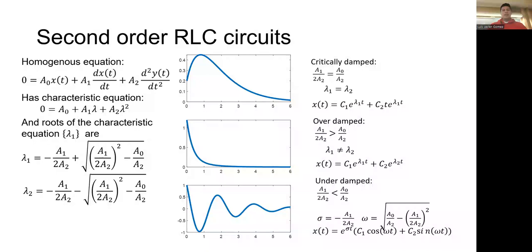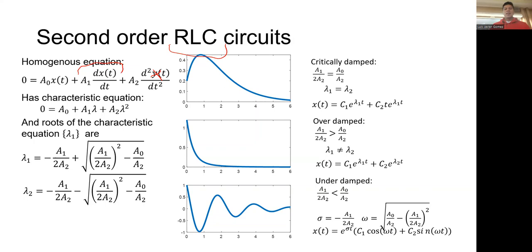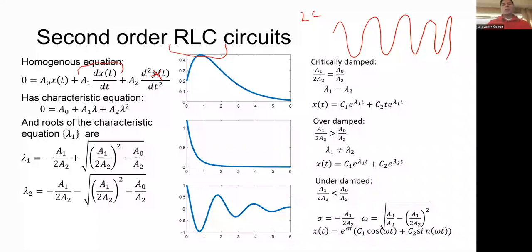Alright, so last class we went over LC circuits. LC circuits were basically similar to what we call RLC circuits. The main distinguishing feature was that you did not have the first-order term. Once we added the resistor, that term appeared and we were able to get a much richer form of responses. From an LC circuit we only got sines and cosines as our roots of the characteristic equation, which we call undamped.